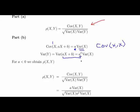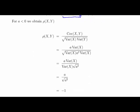So that's it. So for a less than or equal to 0, so for a less than 0, we obtain rho X and Y as follows. So I'm just going to scroll down here now. So that's where we started from in part A, here.